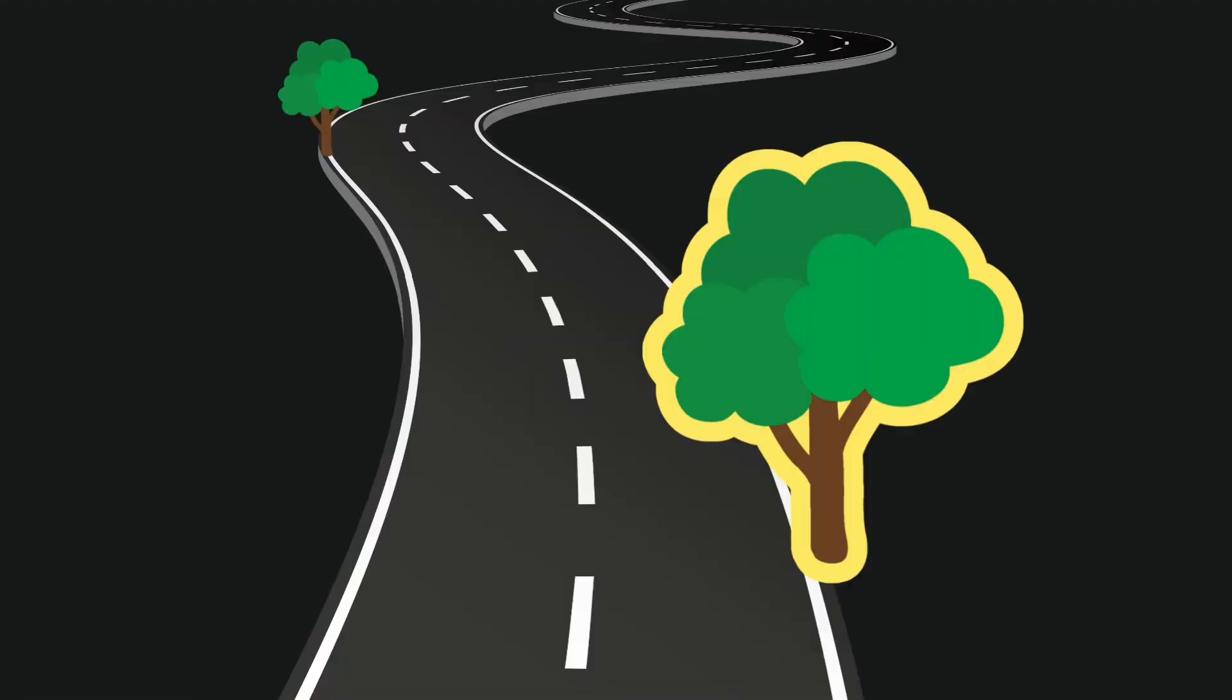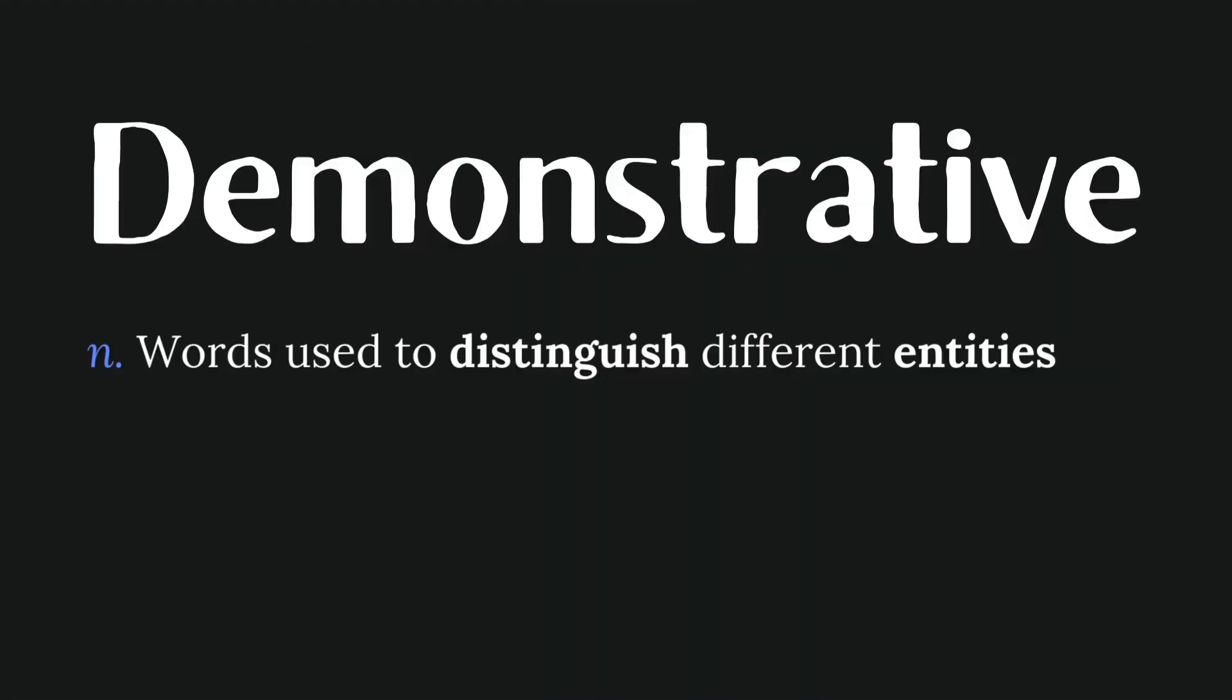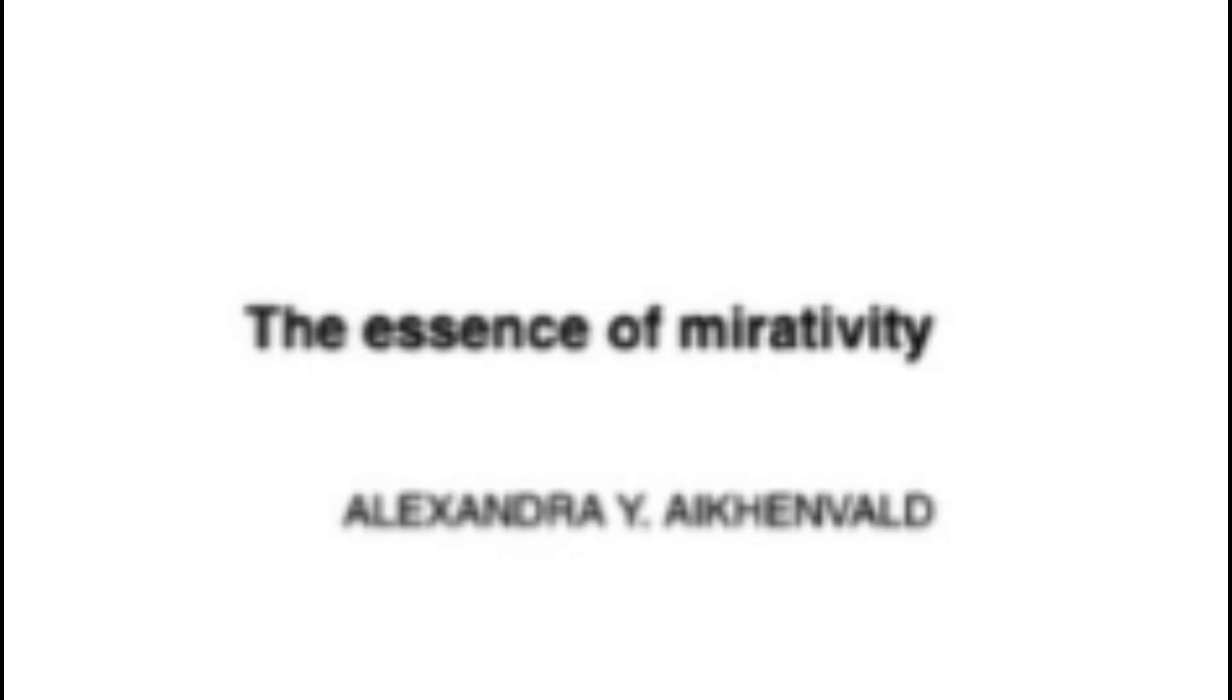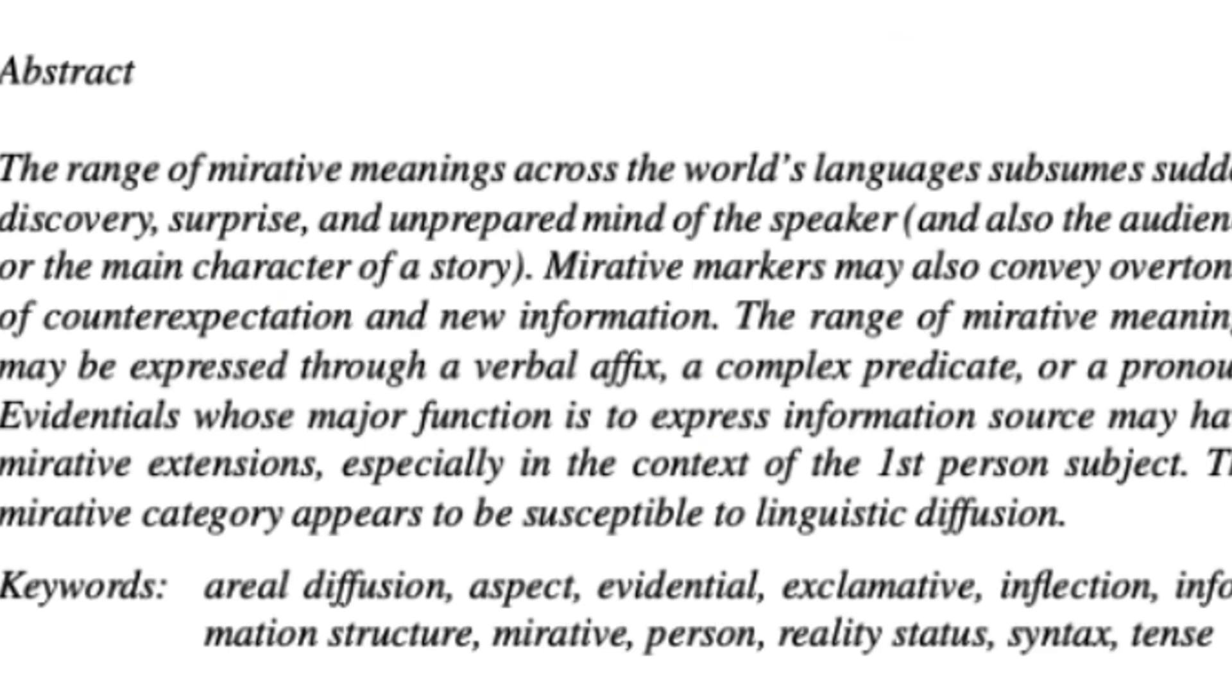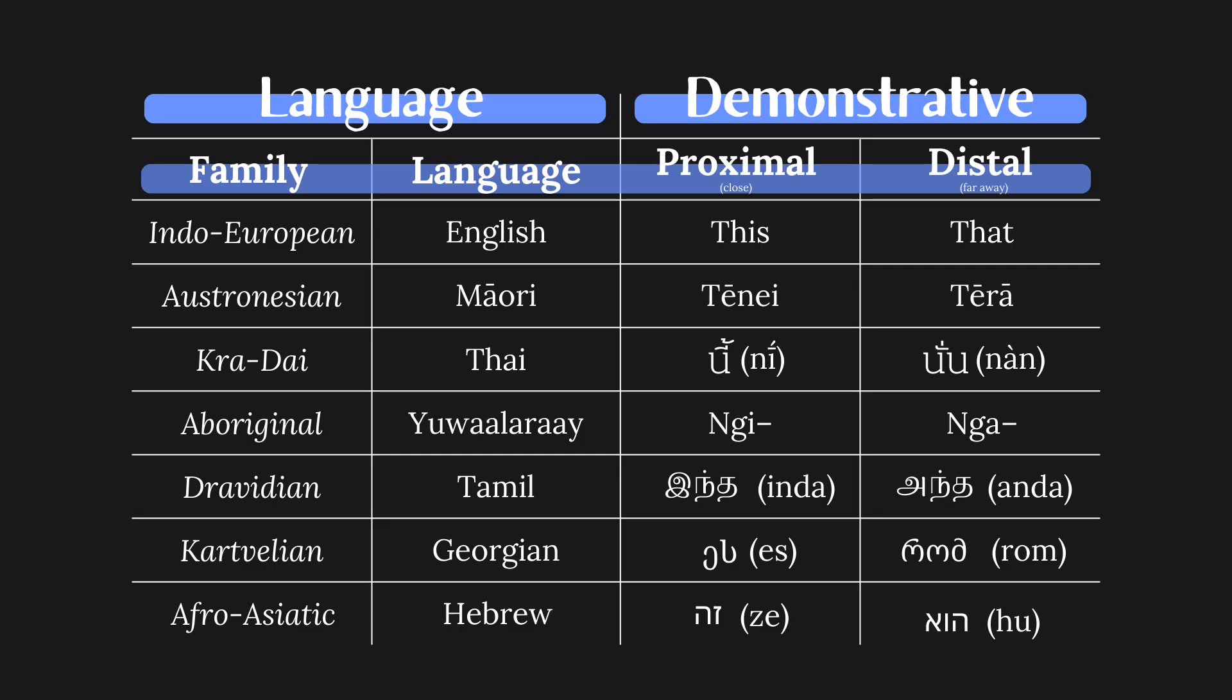Anyway, this and that, along with their plural forms these and those, are words called demonstratives, little words that help us understand what we're talking about in a discussion. Read this, not that. Look at these words, not those. Demonstratives are pretty cool, and I recently noticed something about them that genuinely blew my mind. Here's a table of demonstratives in some languages, each from a different language family. Pay attention to the vowels.